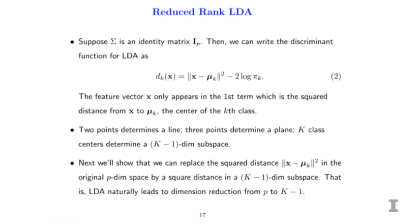What is reduced rank LDA? I want to explain that LDA naturally leads to a dimension reduction of this classification problem. Let's assume that sigma is an identity matrix. Then you can look at the discriminant function for LDA. The first term is essentially the distance from the point x to the class center mu_k — the ordinary L2 distance, because sigma is identity — and then minus 2 log pi_k, which is the prior weights.